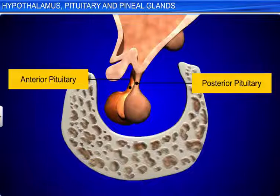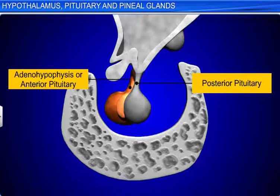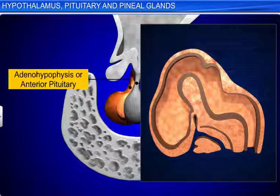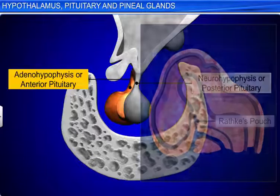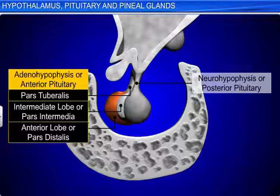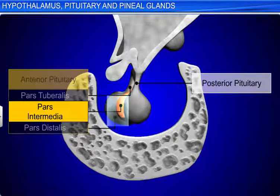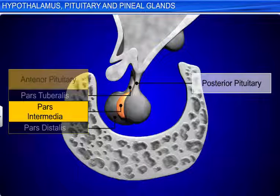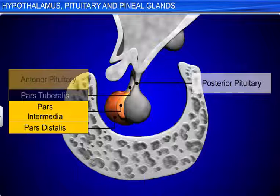Anatomically, the pituitary is divided into the adenohypophysis, or the anterior pituitary, and the neurohypophysis, or the posterior pituitary. The adenohypophysis develops as an outgrowth of the ectoderm called Rathke's pouch, in the roof of the buccal cavity of the developing embryo. It includes an intermediate lobe (pars intermedia) and anterior lobe (pars distalis). The pars intermedia atrophies during human fetal development, and in humans it is almost merged with the pars distalis.